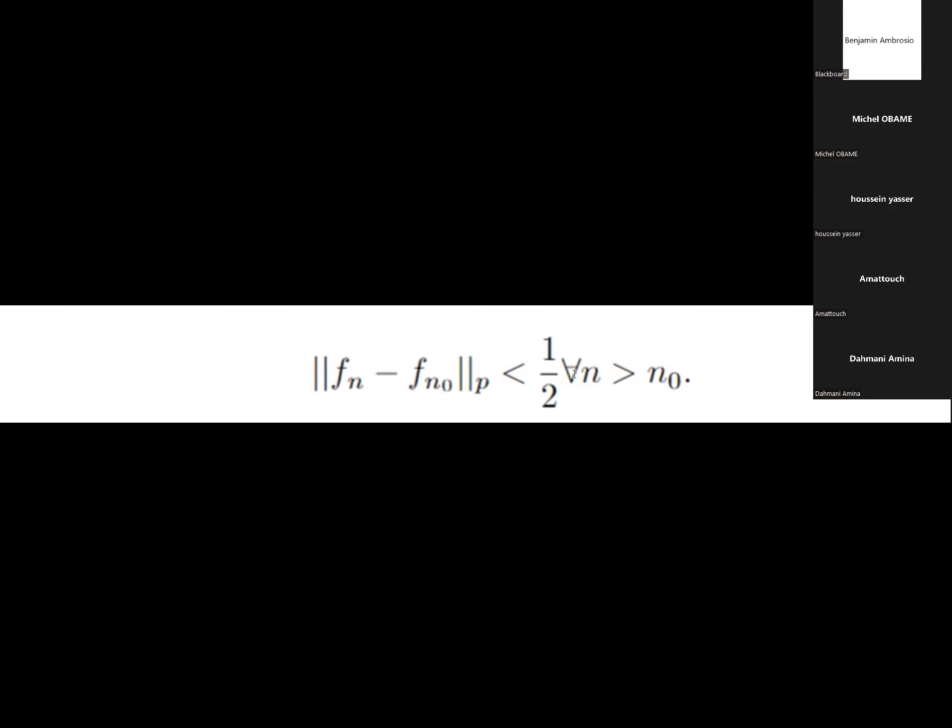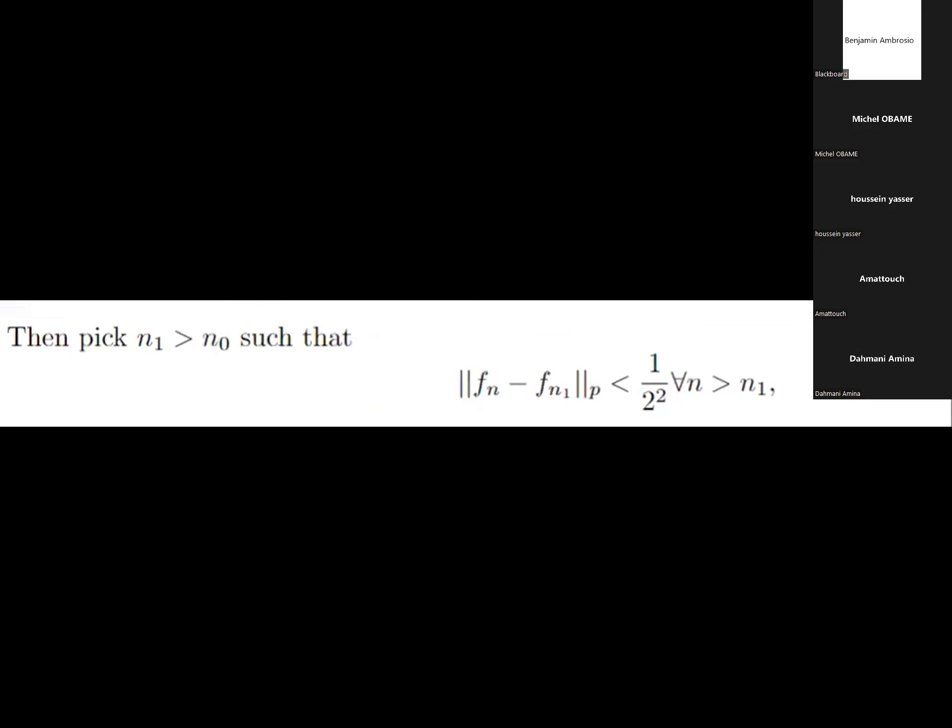Once I have n_0, I can pick n_1 greater than n_0 such that ||f_n - f_{n_1}||_p is less than one divided by two squared. Again, I apply the same thing. Note that here I have one and here I have two.